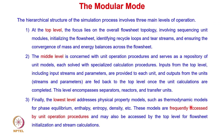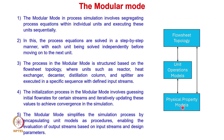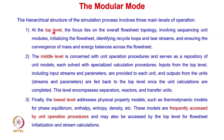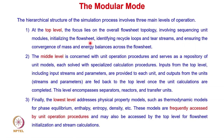The modular mode has a hierarchical structure with three main levels: the lowest level is physical property models, the intermediate is unit operation models, and the highest level is the flow sheet topology. At the top level, the focus is on overall flow sheet topology — sequencing unit modules, initializing the flow sheet, identifying recycle loops, and identifying tier streams, and ensuring convergence of mass and energy balance across the flow sheet.